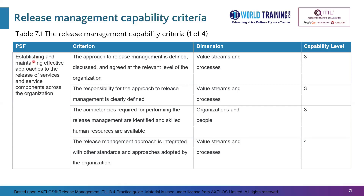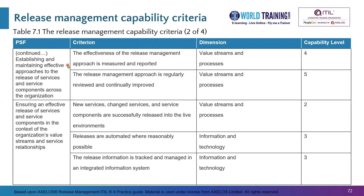Looking at the capability criteria table: the leftmost column shows the practice success factor — establishing and maintaining effective approaches to the release of services and service components across the organization. For this first PSF, there is nothing defined at level 2; criteria begin from level 3. At level 3, responsibilities for the release management approach are defined, discussed, and agreed at the relevant organizational level, clearly defined, and required competencies with skilled human resources are available. At level 4, the release management approach is integrated with other standards and approaches adopted by the organization.